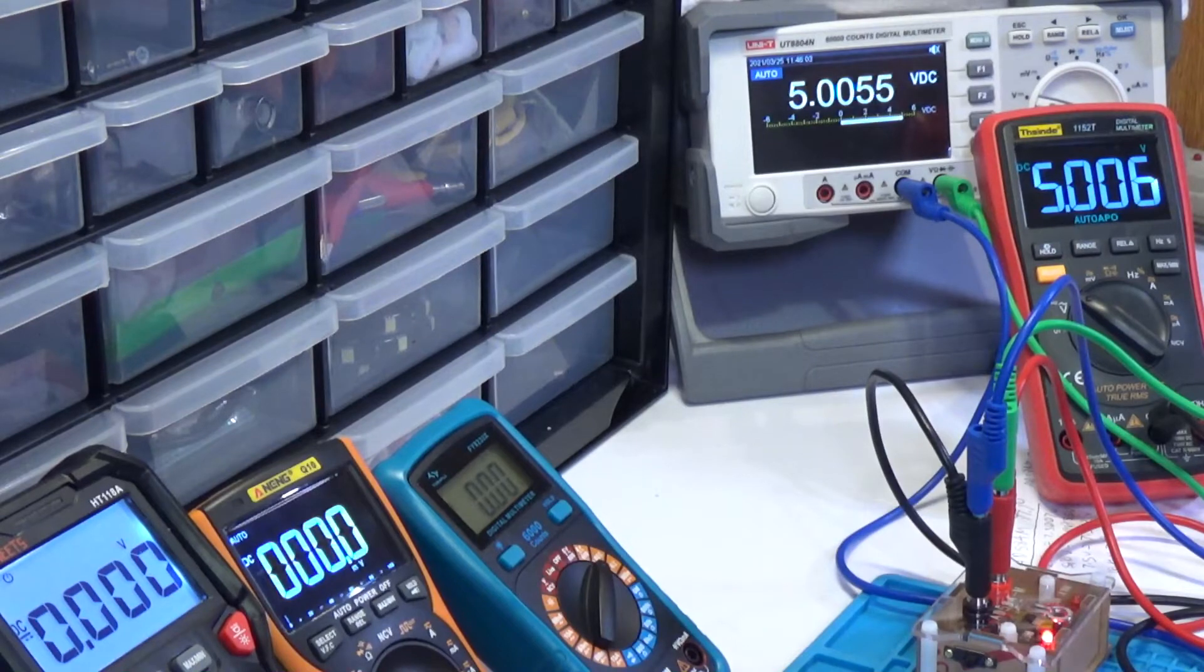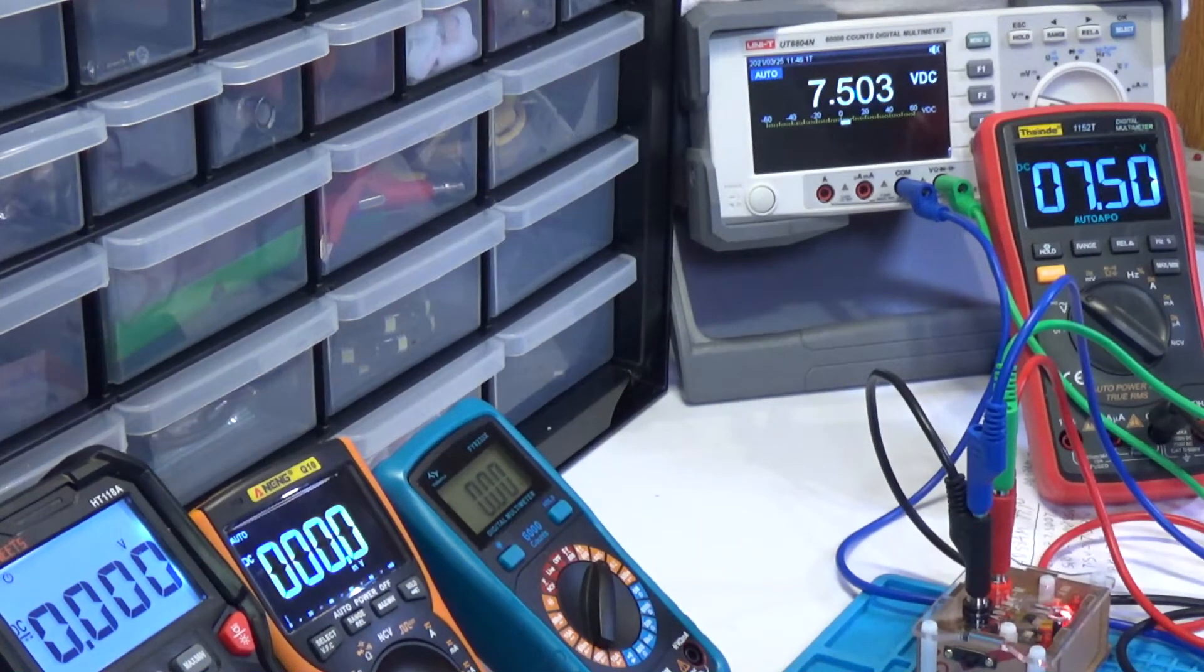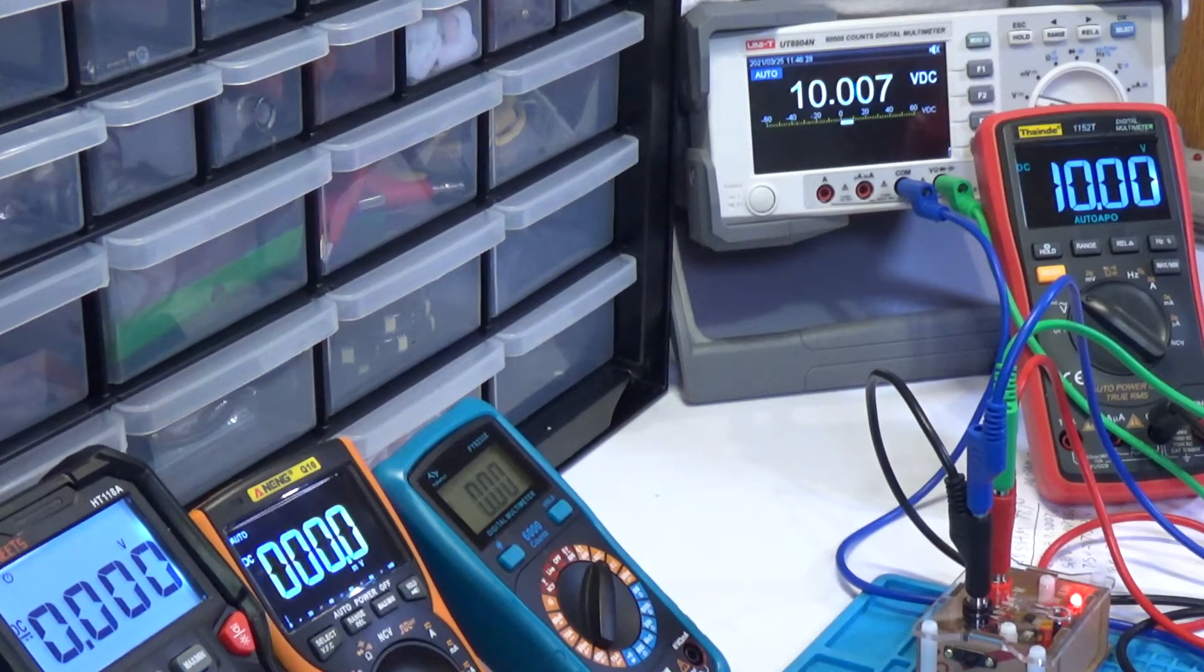5 volts. Look at that, getting 5.005. And occasionally, actually it's settled on 5.006, which is where it should be. So again, quite impressive. Let's go to 7.5 volts. And we are getting 7.50, which is exactly what it should be reading in this scale. And last but not least, 10 volts.